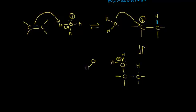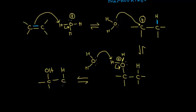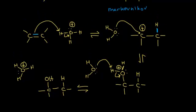We need one more acid-base reaction to get rid of that proton on our oxygen. Water functions as a Brønsted-Lowry base this time, accepting a proton — leaving those electrons behind on the oxygen. We end up with an OH on the carbon on the left and a hydrogen on the carbon on the right. Water was added across the double bond, and hydronium is regenerated: H2O + H+ → H3O+. Remember, a carbocation is present, so you have to think about Markovnikov addition and possible rearrangements.